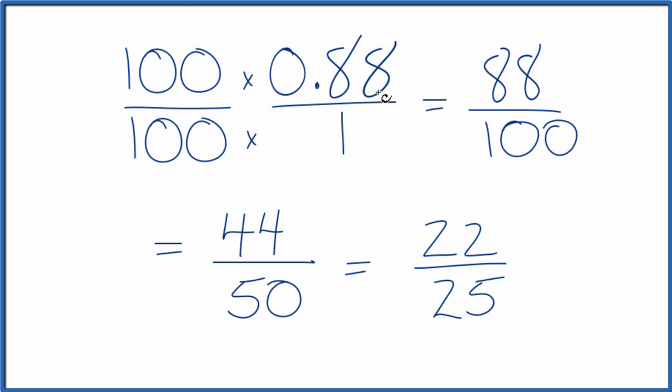So the decimal 0.88 equals the fraction 22 over 25, or 44 over 50, or 88 over 100. If you divide 22 by 25, 44 by 50, or 88 by 100, you'll get the decimal 0.88.